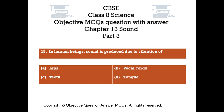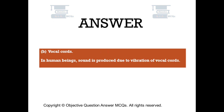Question number 15. In human beings, sound is produced due to vibration of: Option A – lips. Option B – vocal cords. Option C – teeth. Option D – tongue. The right answer is option B. In human beings, sound is produced due to vibration of vocal cords.